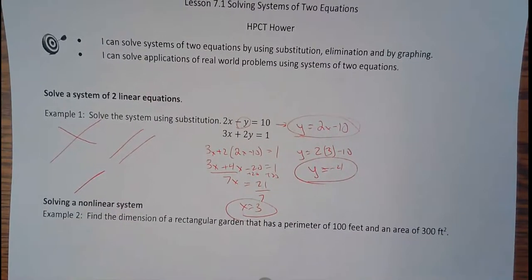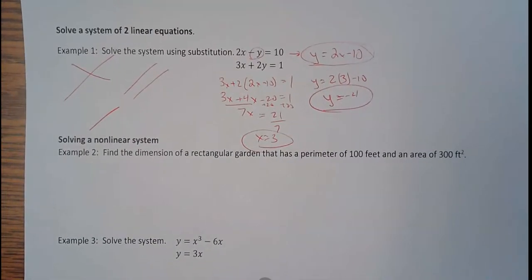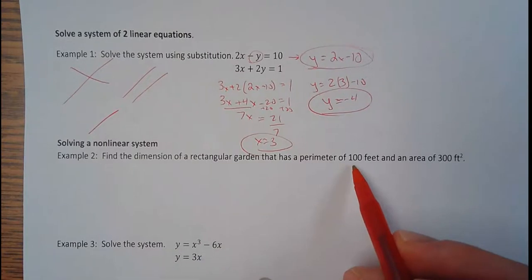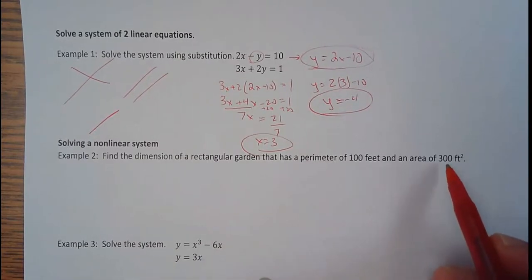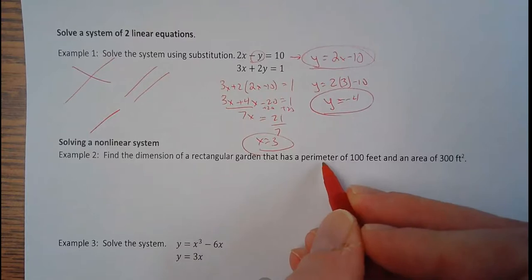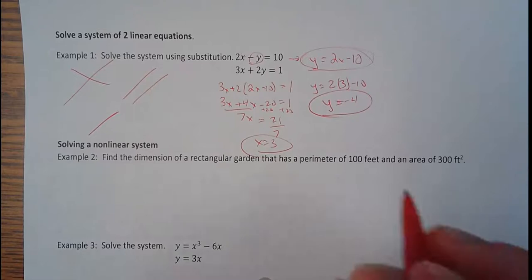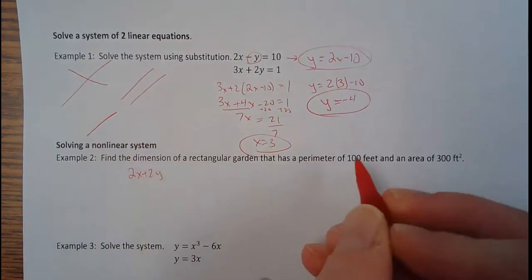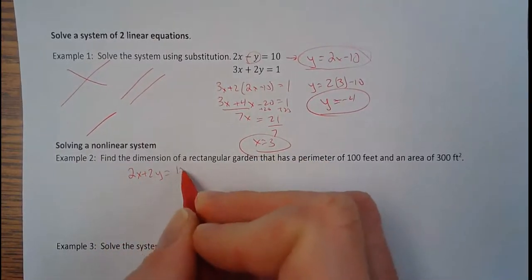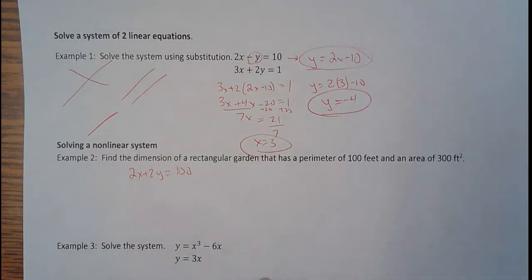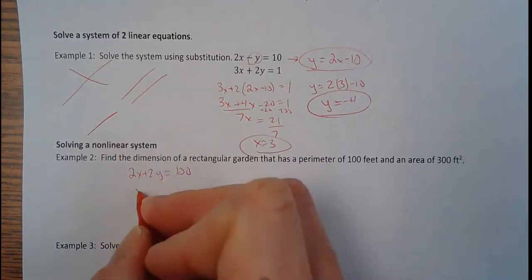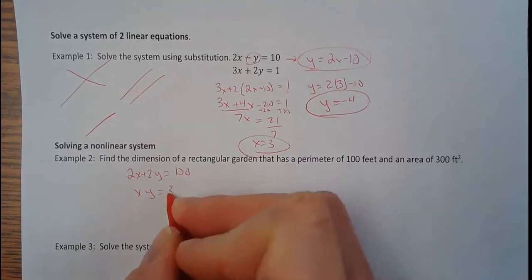Now, a non-linear system. Systems where you could have one linear equation, but the other one's not, or two non-linear equations. This one says find the dimensions of a rectangular garden that has a perimeter of 100 feet and an area of 300 square feet. So I'm talking about perimeter, and I'm just going to say x is length and y is width. So it would be 2x plus 2y equals 100. So two times the width plus two times the length equals the perimeter. And then the other equation, x times y, length times width, equals 300.